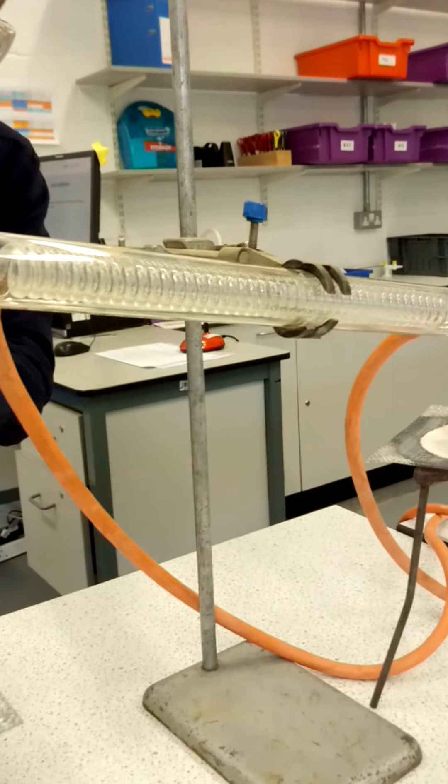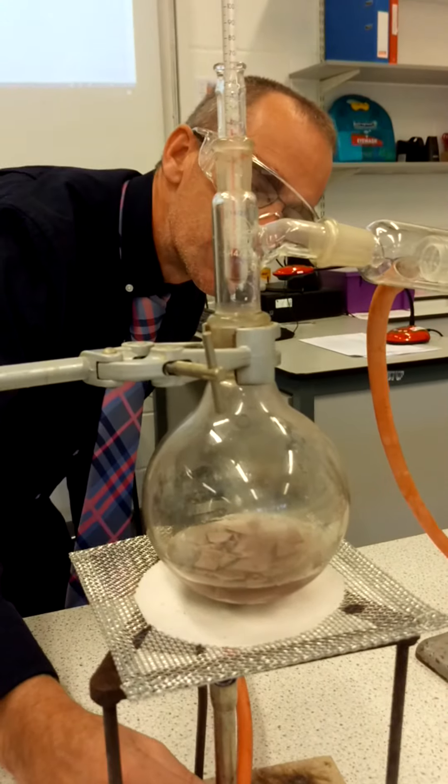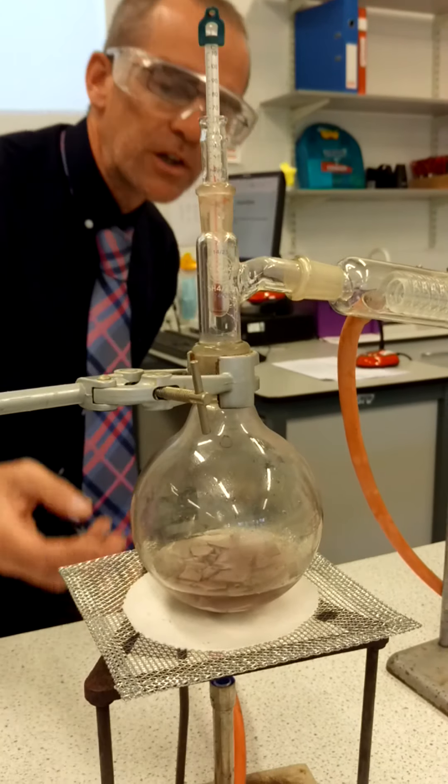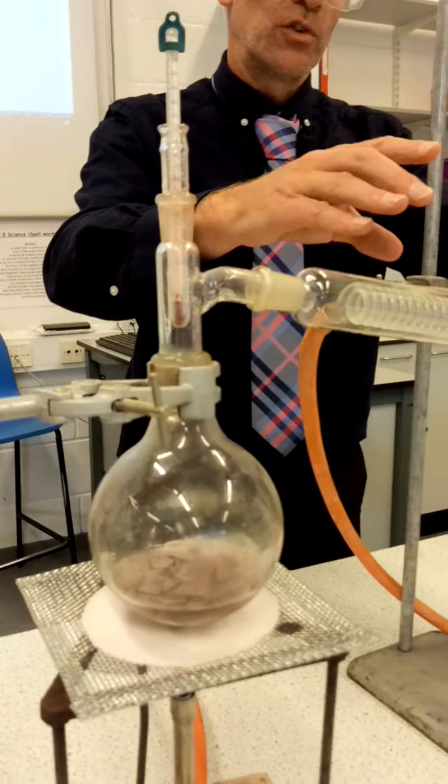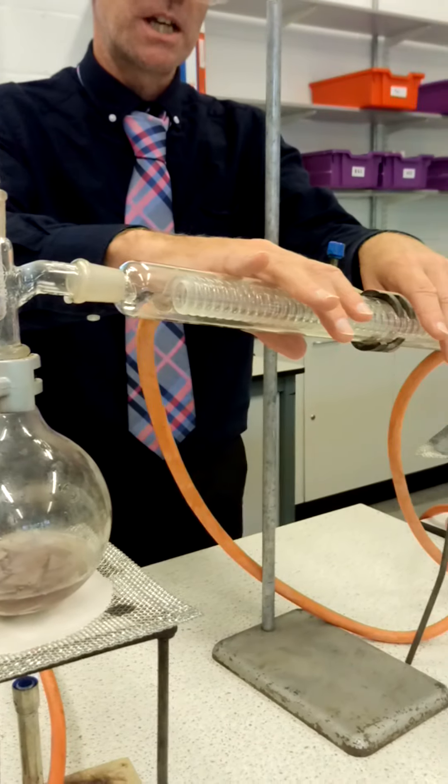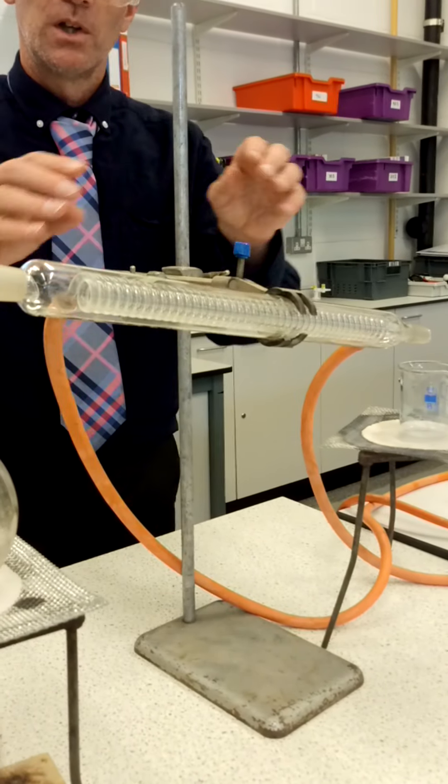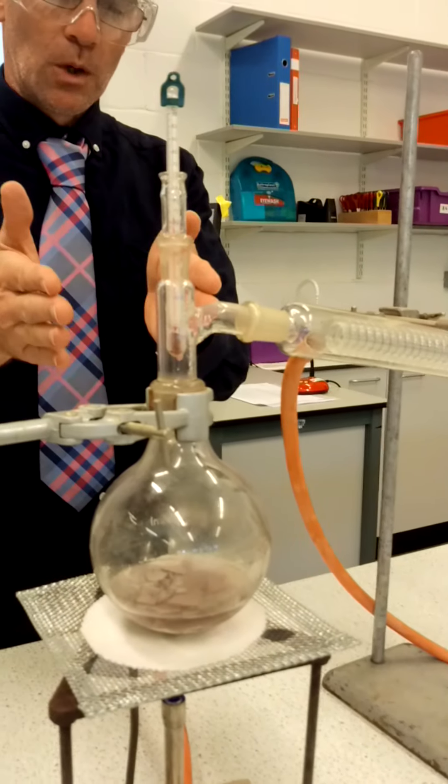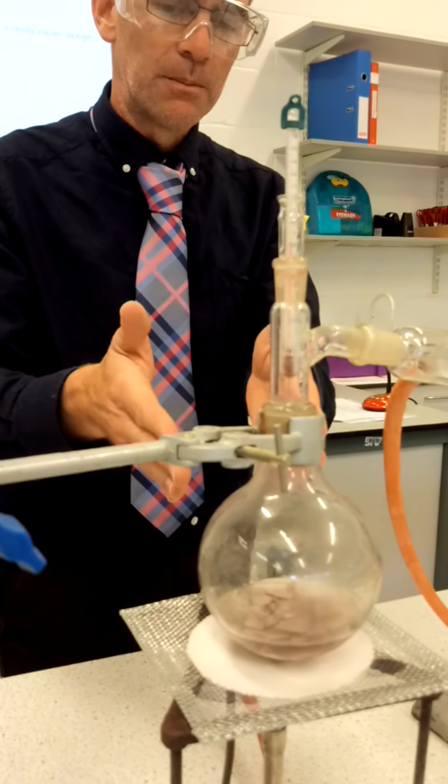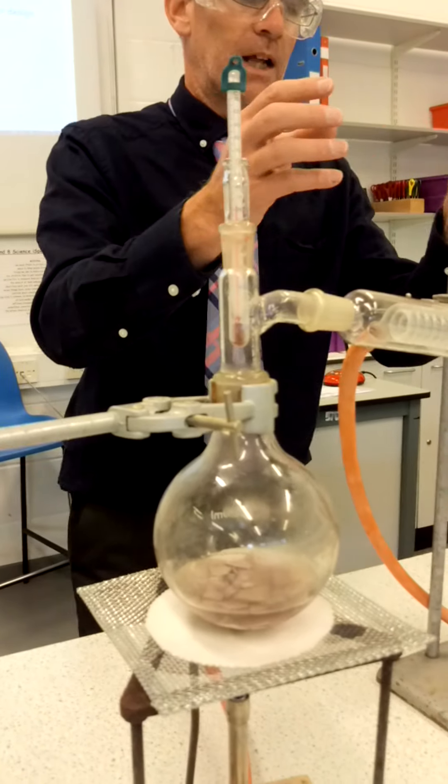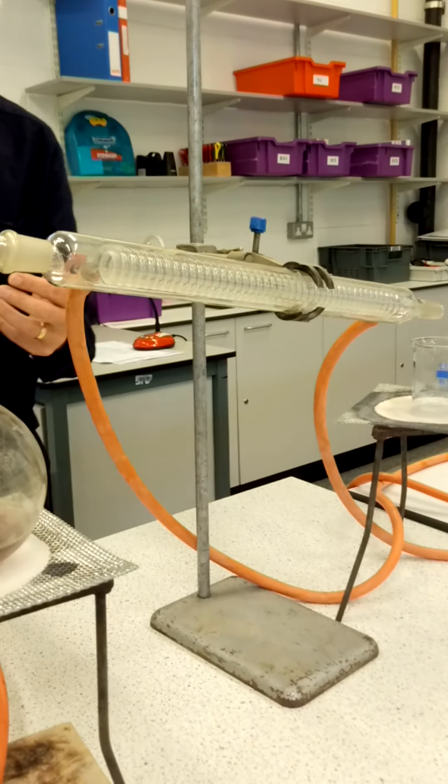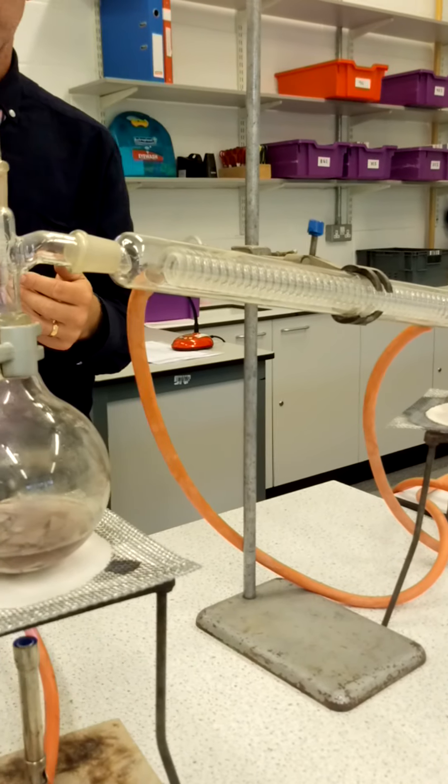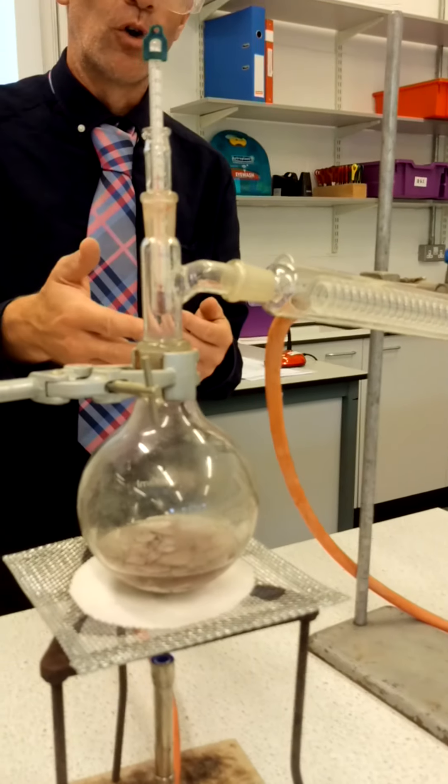So we've got heat here, which will hopefully be making things boil and evaporate. And a condenser here, which is going to stay lovely and cold. So there are going to be two processes going on. We have evaporation here in a minute, and condensing going on here. And what I want to know is, can I separate the ethanol from the water?